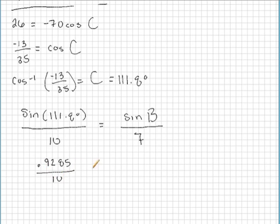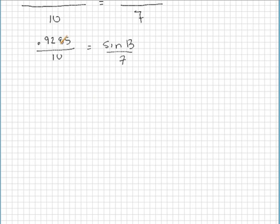.9285 divided by 10 is equal to sine b over 7. Let's solve for sine b just like we did before. So .9285 divided by 10 is approximately, well, we just moved the decimal place over one. So we'll get .09285.